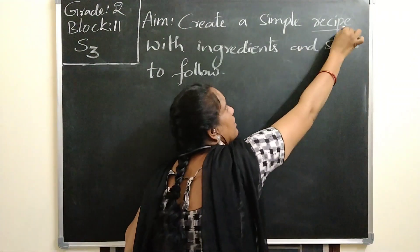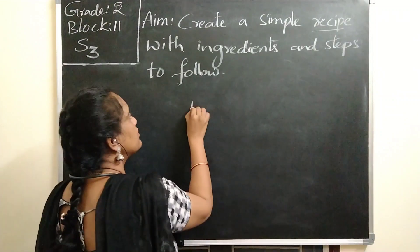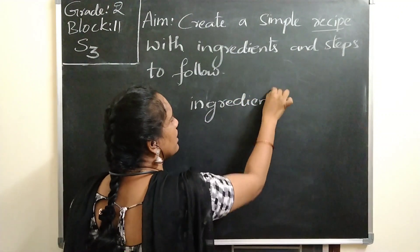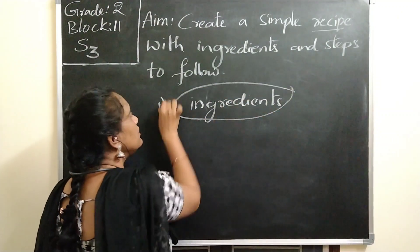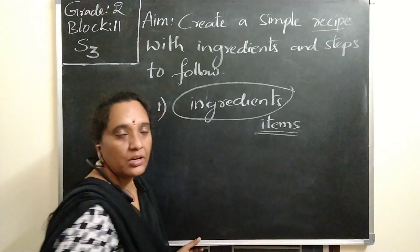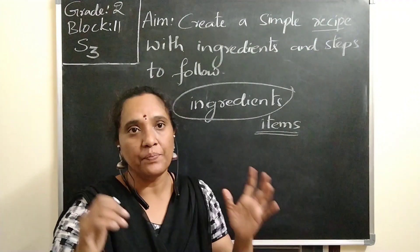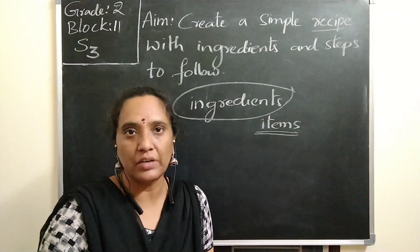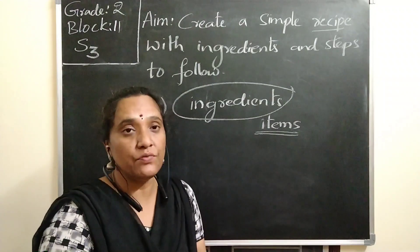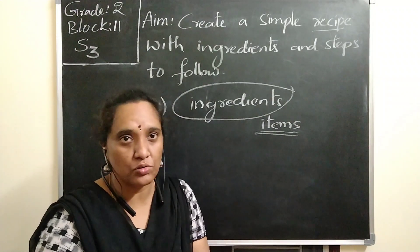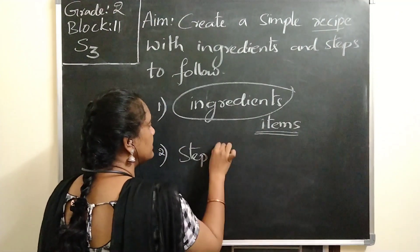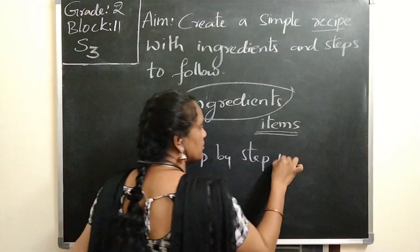For a simple recipe, first we need ingredients. Ingredients are the items which we need to prepare a food item — the things we want to eat. After knowing how to use all the ingredients, we also need step-by-step instructions. So second, we need step-by-step instructions.